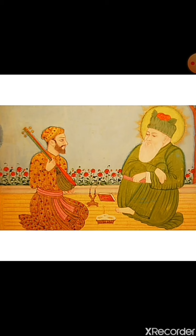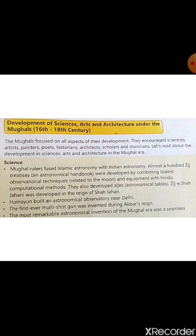Under the Mughals, major developments occurred in sciences, arts and architecture. Mughal rulers fused Islamic astronomy with Indian astronomy. Almost 106 treatises and astronomical handbooks were developed by combining Islamic observational techniques and equipment with Hindu computational methods.